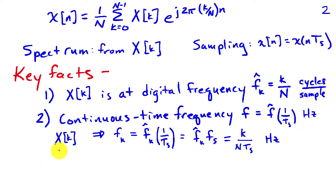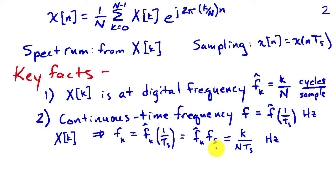The coefficient x of k has an associated continuous time frequency f-sub-k, which is f-hat-k times 1 over t-sub-s. Since 1 over t-sub-s equals the sampling frequency f-sub-s, combining these two terms, x of k is located at frequency k divided by N·t-sub-s hertz.